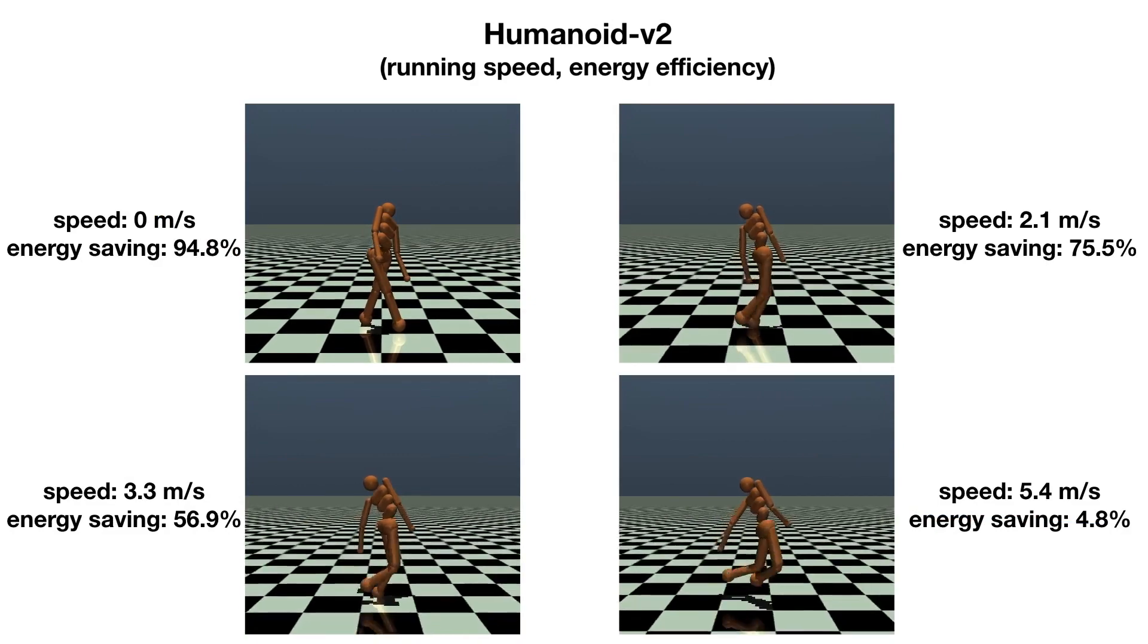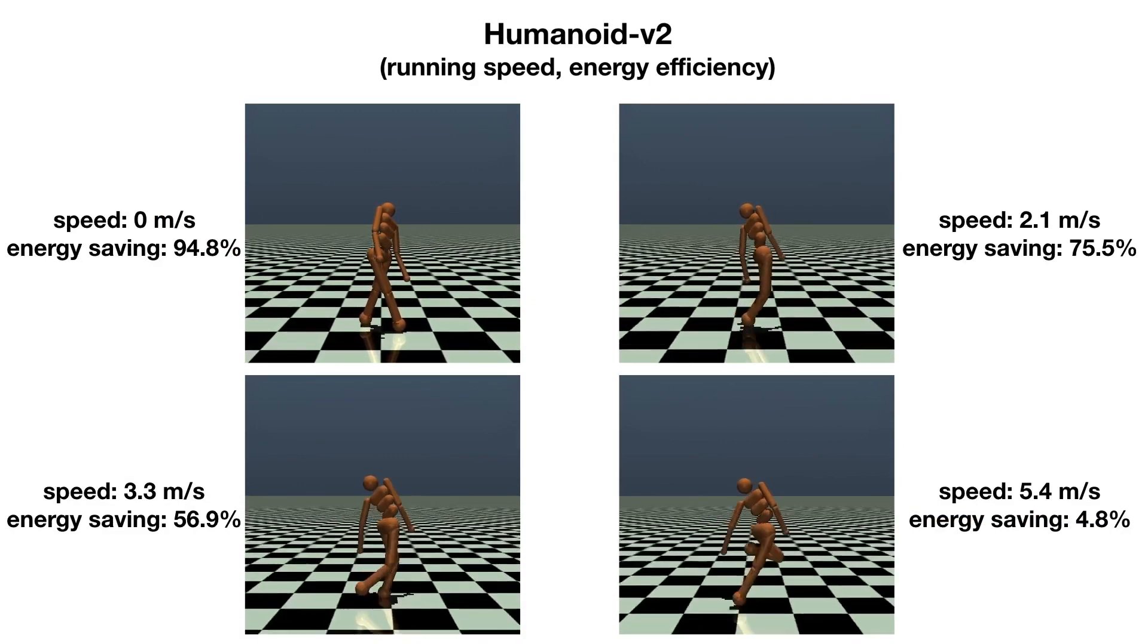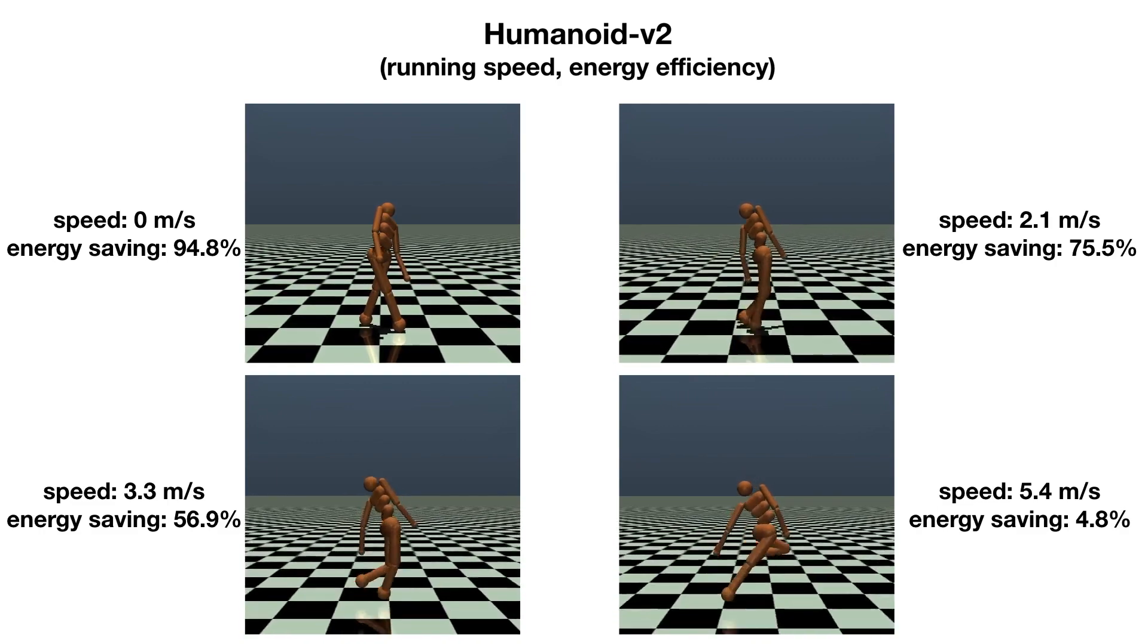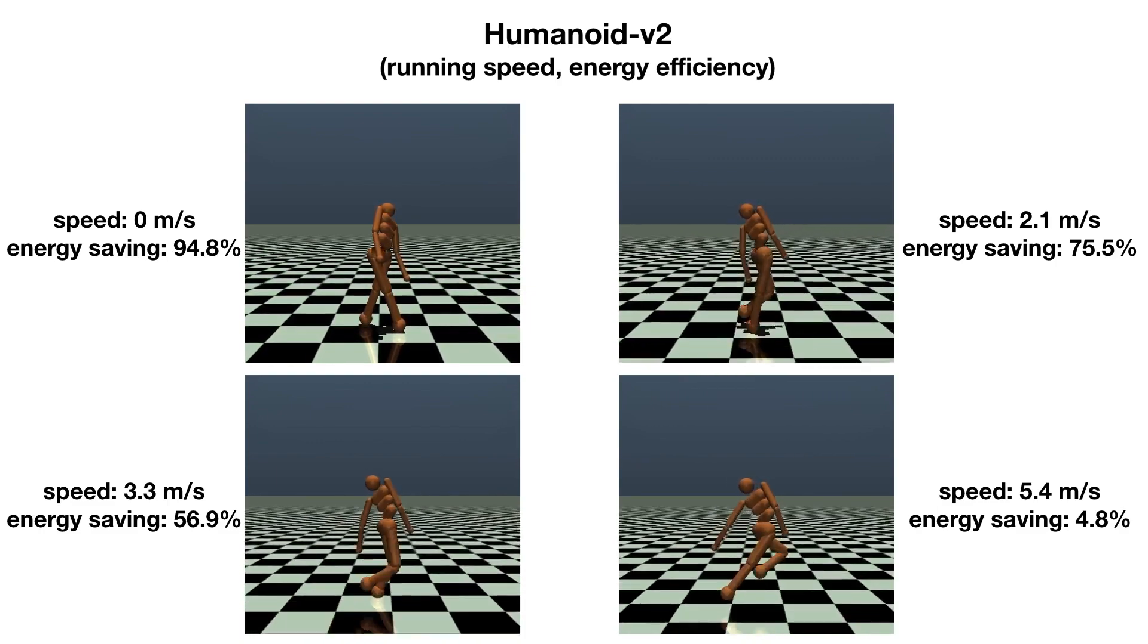Here are the trained policies for the humanoid problem. We visualize four different policies with different trade-offs between running speed and energy efficiency.